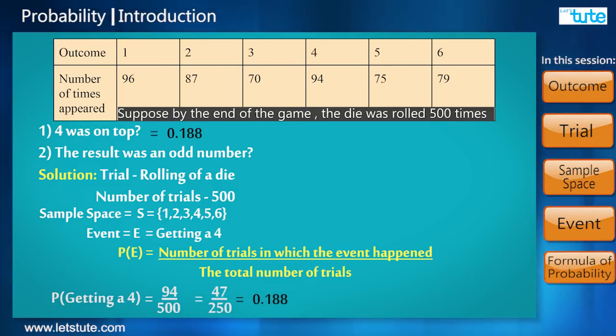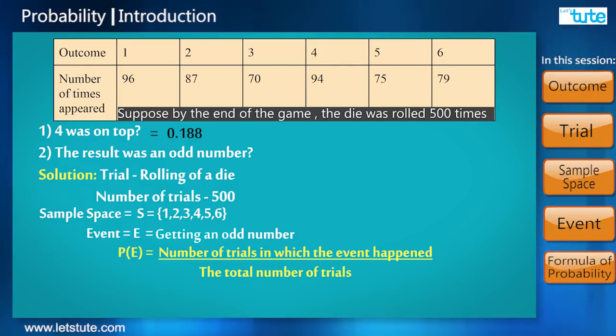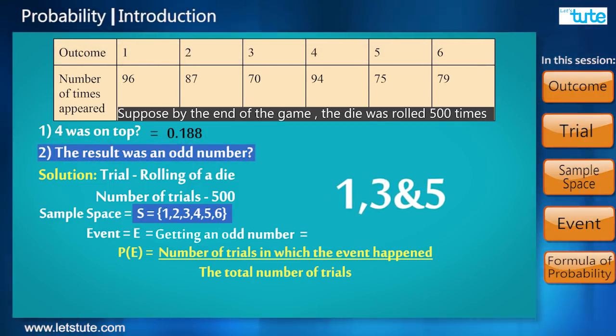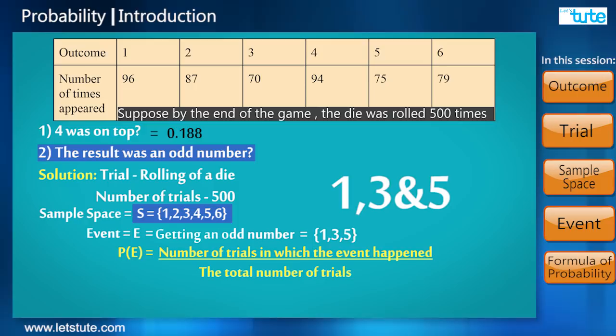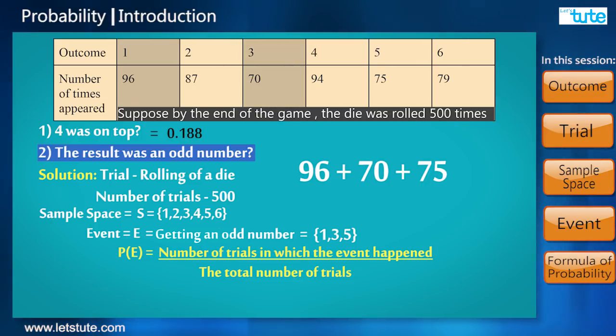So using the formula for empirical probability, probability of getting a 4 is 94 upon 500. For the second part, the desired event is getting an odd number. Of all the outcomes in the sample space, the odd numbers are 1, 3, and 5.